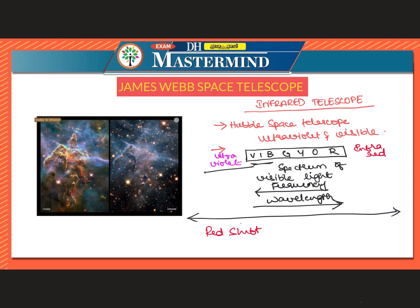Redshift is a key concept for astronomers. The wavelength of light is stretched and seen as shifted towards the red part of the spectrum. As light travels millions of light years, its wavelength shifts towards the infrared region. So the light arriving from distant objects vibrates at infrared wavelengths, and to capture it, we need an infrared telescope.